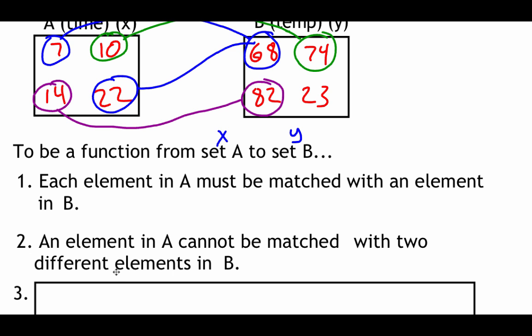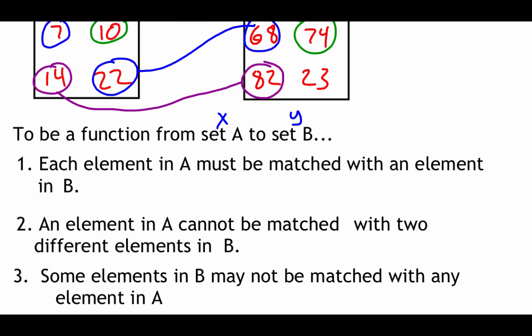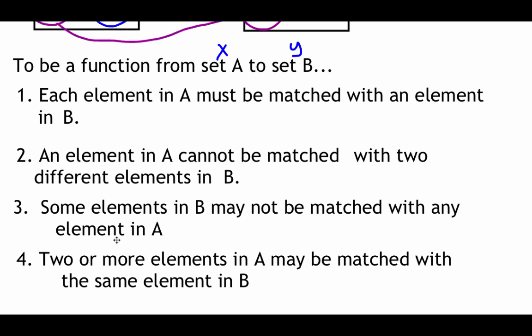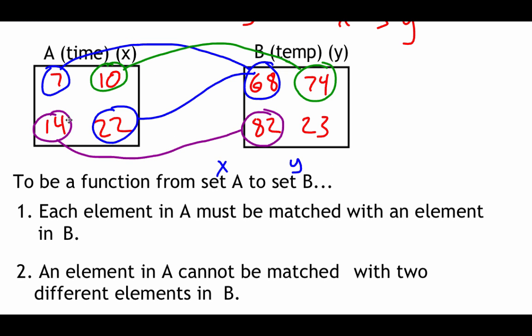The last two characteristics are just things that could happen. First, there might be an element in B that's not matched with anything — like 23 degrees; we never measured that temperature, and that's okay. Second, two or more elements in A can be matched with the same element in B — 7 o'clock and 10 PM were both 68 degrees. Totally fine, that doesn't affect whether it's a function.